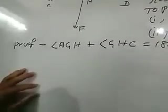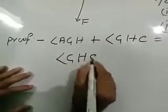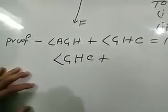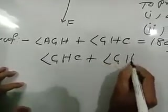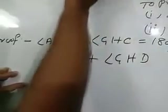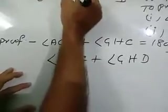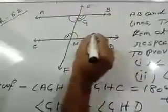Next, you write angle GHC plus angle GHD is equal to 180 degrees. You see, angle GHC plus GHD. These two angles are linear pair.